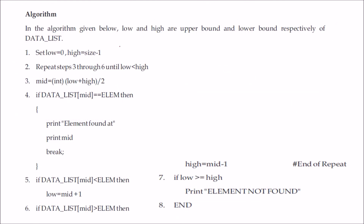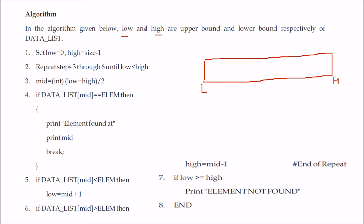This is the algorithm. We have a low and a high upper bound — low equals 0 and high equals size minus 1. We find the midpoint as integer of low plus high divided by 2. Low and high are the indices, not the actual elements. You repeat steps 3 to 6 again and again — low and high will change as the search narrows.